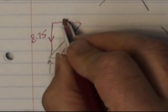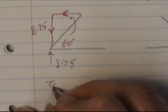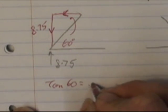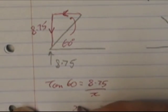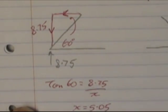Tan 60 is opposite over adjacent. So tan 60 is 8.75 over x. x is equal to 5.05.